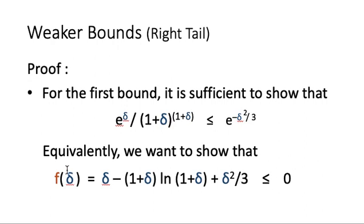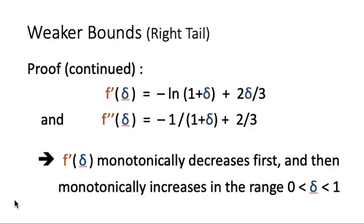We call this function f(delta) and want to show it is less than or equal to 0 for delta between 0 and 1. We analyze the first and second derivatives. From the second derivative, by evaluating at delta = 0 and delta = 1, we see that f''(delta) starts with a negative value and then becomes positive. This means f'(delta) first decreases and then increases in the range [0, 1].